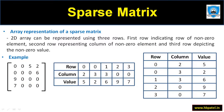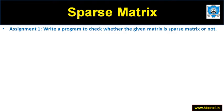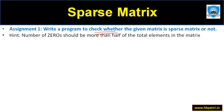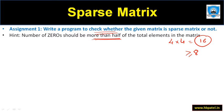Now let us talk about how we are going to implement this using C programming. We will write a small C program to check whether the given matrix is a sparse matrix or not. If more than half of the elements are zero, that is a sparse matrix. For a 4×4 matrix — total 16 elements — if more than 8 elements are zero, then it is a sparse matrix.